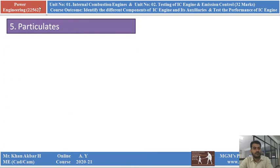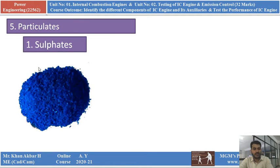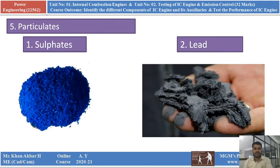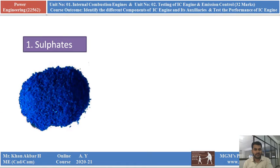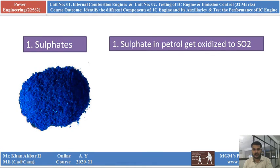The next pollutant is particulates. There are two types of particulates in the exhaust gas pollutants of a petrol engine: the first is sulphate and the second is lead. These materials are also available in liquid form in petrol. Sulphate in petrol gets oxidized to SO2 — sulfur dioxide. The sulphate is available in the fuel and when it comes in contact with oxygen, it forms SO2.